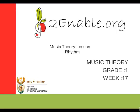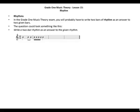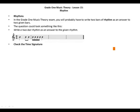Hello, welcome to Music Theory Grade One, Week 17. This week we're talking about rhythm. In the Grade One music theory exam, you'll probably have to write two bars of rhythm as an answer to two given bars. The question could look something like this: write a two-bar rhythm as an answer to the given rhythm. So you are given two bars and you need to write two bars again.